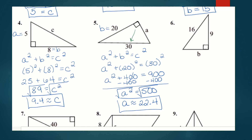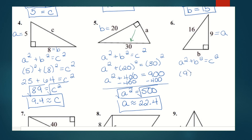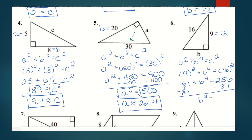For number six, I have leg A equal to nine and hypotenuse C equal to sixteen — I'm looking for leg B. Nine squared is eighty-one, plus B squared equals sixteen squared which is two fifty-six. Subtracting eighty-one from both sides gives B squared equals one seventy-five. Since that's not a perfect square, taking the square root gives B approximately 13.2.